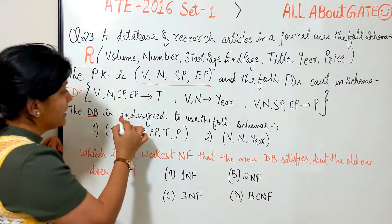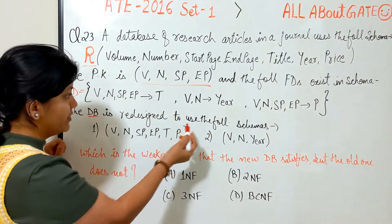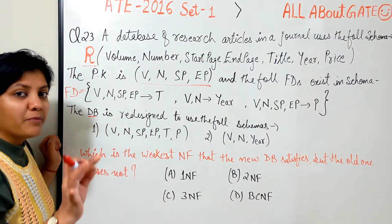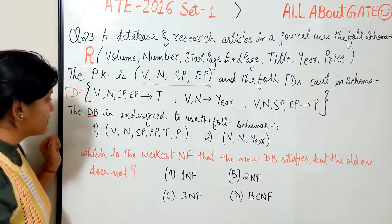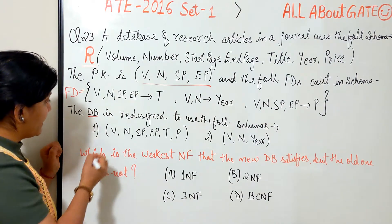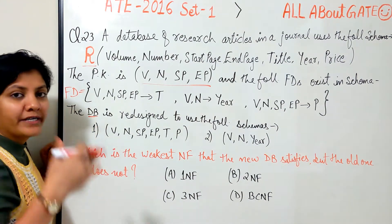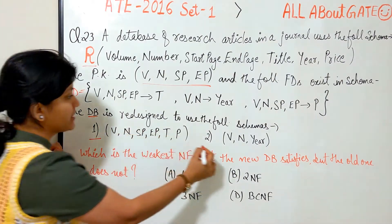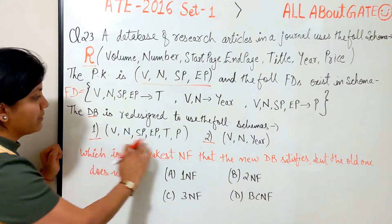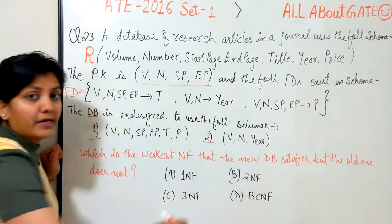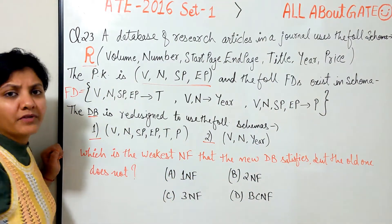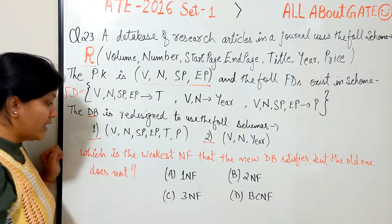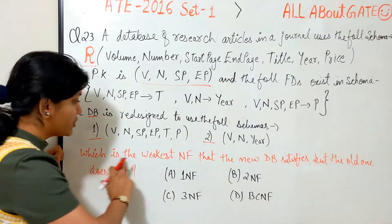Furthermore, the question says the database is redesigned to use the following schemas, which simply means it has been decomposed and normalized into two relations. This is the first one and this is the second one — you have some attributes here, some attributes there, and of course a common attribute as well. This is all the data given.